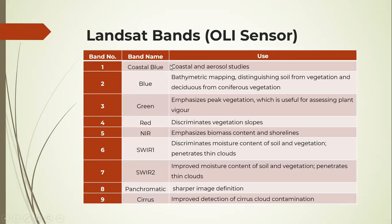The coastal blue is used for coastal and aerosol studies. Blue is for bathymetric mapping, that is studying the flow of the oceans and water bodies, distinguishing soil from vegetation and deciduous from coniferous vegetation. The green band emphasizes peak vegetation, which is useful for assessing plant vigor.